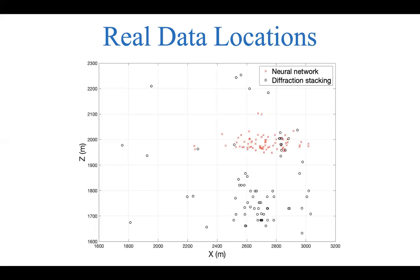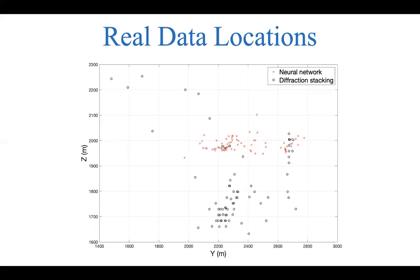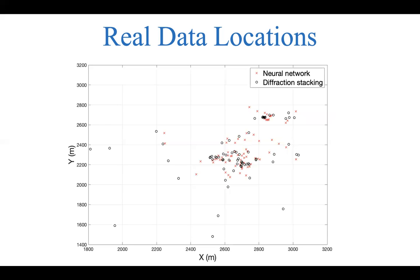Here are the locations obtained on the x-z plane, where red crosses show the neural network solution and black circles show the diffraction stacking solution. We observe that neural network solutions are more constrained in depth, showing better precision compared to diffraction stacking. We observe the same behavior on the y-z plane. On the x-y plane, both methods show similar solutions, though diffraction stacking has a few events that are more scattered away from the cluster.